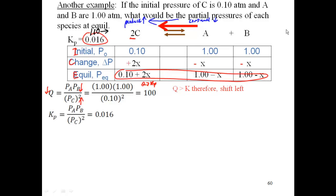So Kp is pA, pB over pC squared, just like Q, except now we're going to plug in equilibrium expressions, equal to 0.016. Plug in my values, get 1 minus x, 1 minus x over 0.1 plus 2x. Okay, that's plugging in my equilibrium values. Going back, plugging in those values into my expression.